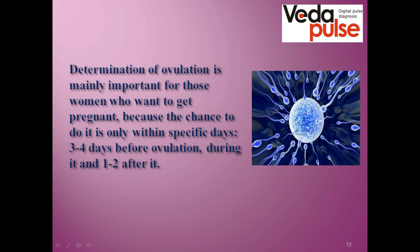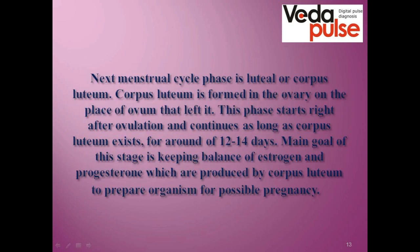It is very important to determine the moment of ovulation for those who are interested in pregnancy and for those who want to avoid it using natural contraception. The days when a woman can get pregnant are usually three to four days before ovulation, ovulation itself, and one to two days after it. The second phase of the menstrual cycle is called the luteal phase, because luteinizing hormone regulates everything during this phase. It is also called the phase of the corpus luteum — the gland of internal secretion which is formed in the ovary on the place of the ruptured follicle.